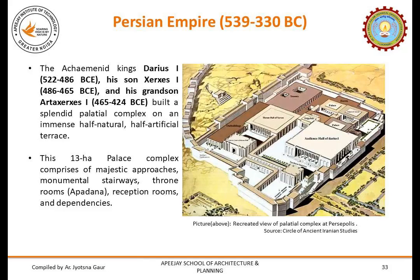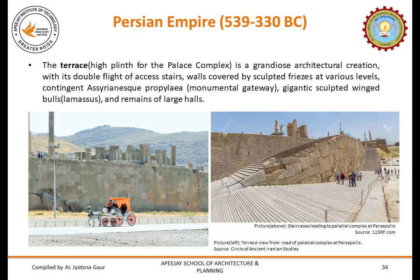Primary sources indicate that Darius saw himself building an important stronghold. This 13-hectare palace complex comprises majestic approaches, monumental stairways, throne rooms, reception rooms and dependencies. The terrace — the high plinth for the palace complex — is a grandiose architectural creation with its double flight of access stairs and walls covered by sculpted friezes at various levels. Contingent Assyrian-esque propylia form the monumental gateway, flanked by gigantic sculpted winged bulls — the Lamassu — and remains of large halls. Pictures show the scale, height and type of staircases used within the palatial complex.